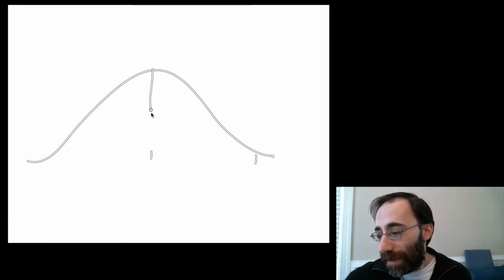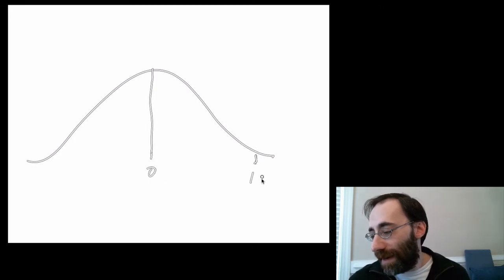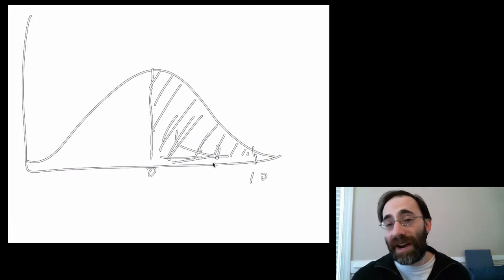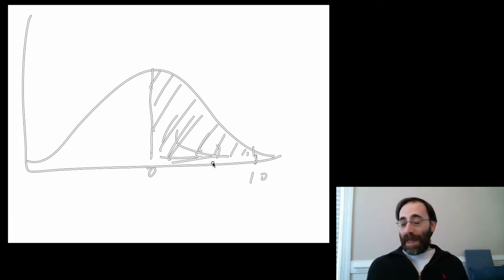Well, it turns out that the chance of being between here and here, say this is 0 and this is 10, is exactly the area under the curve here. This is an axis. This area, the shaded area, is the area under the curve. And this is the chance of being between 0 and 10, given this probability distribution.